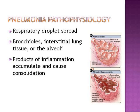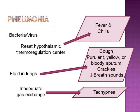Pneumonia is an infectious process. It's spread by respiratory droplets and it causes inflammation in the lungs. It occurs commonly in the bronchioles, interstitial lung tissue, or the alveoli, so it has a ventilatory and a diffusion component. Products of inflammation accumulate and cause consolidation. The bacteria or the virus invades, and at that point the body resets its hypothalamic thermoregulation center and we will see fever and chills.